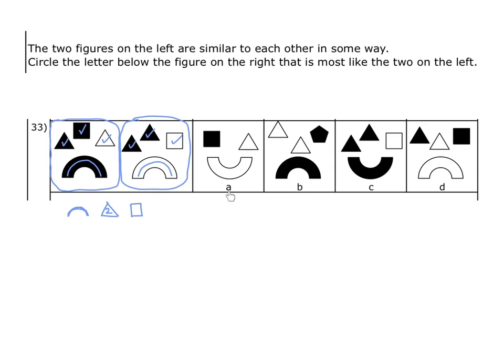Option A, first of all, has the semicircle in the wrong orientation. It only has one triangle, not two, and although it has one square, the other elements are incorrect. So A is not the right option.